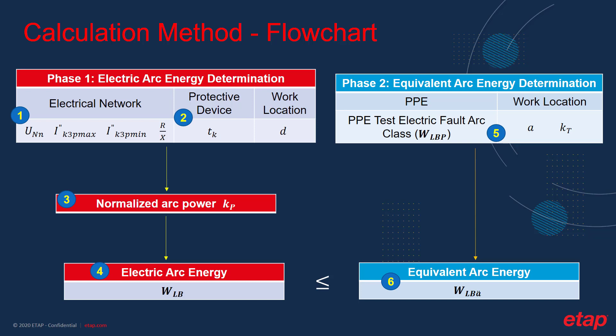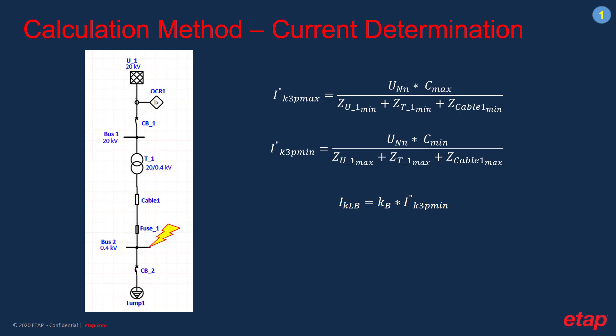Now that we have more information on the background, we can move on to the actual methodology. The calculation process can be divided basically into two phases. The first phase is the determination of the maximum electric arc energy to be expected at the workplace if an arc flash occurs. Each phase can be further divided into several steps, which will be covered in the next slides. For the first step, we need the basic information about the electrical network, such as the voltage level and the maximum and minimum short-circuit current available at the fault location, which can be obtained through simple equations. Once the short-circuit currents are obtained, the actual arcing current needs to be calculated, multiplying the minimum short-circuit current by the current limiting factor Kb.